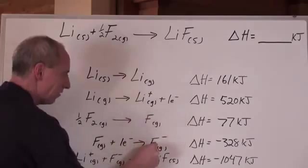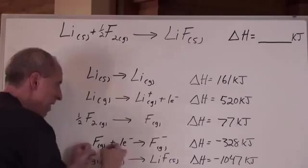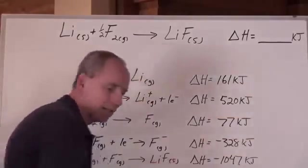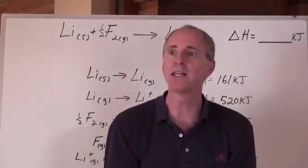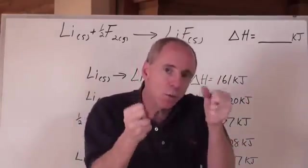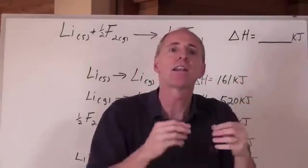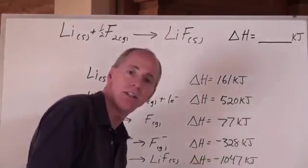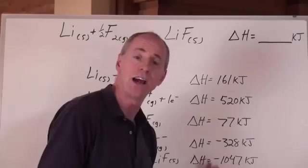Finally, we've got Li+ and F- coming together — force of attraction, positive to negative — bonds are forming and energy is released. They go from gas immediately to a solid, which is what happens with ionic compounds. The gases come together, drop down into a solid, and tons of energy is released as Li's and F's come together in one-to-one ratios in crazy clumps that make an ionic crystal.